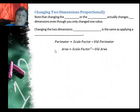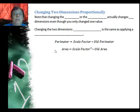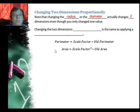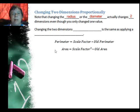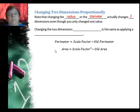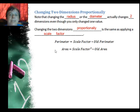When you change two dimensions proportionally, it's actually easier. Note that changing the radius or diameter of a circle actually changes both dimensions, even though it seems like you only change one value — because if you double the radius, that changes the circle in every direction. Changing two dimensions proportionally is really the same as applying a scale factor, which we learned about several units ago.